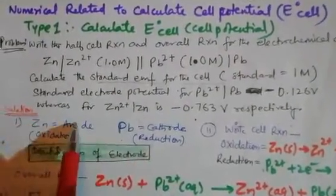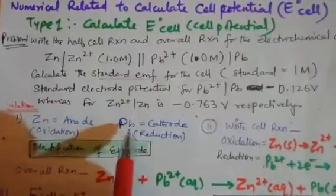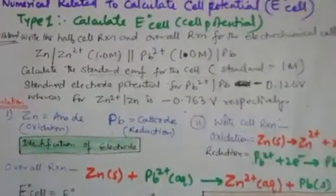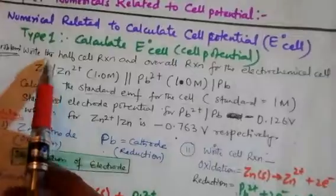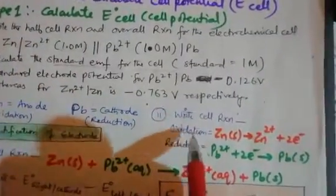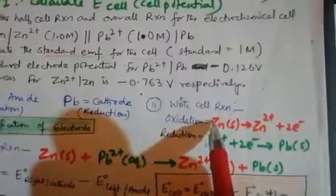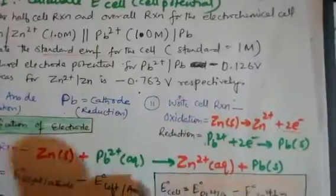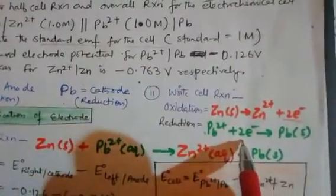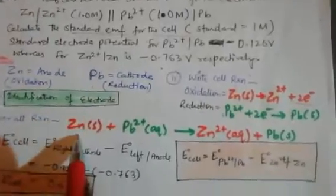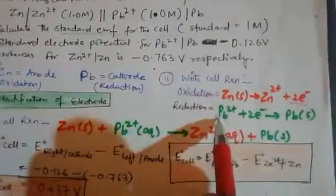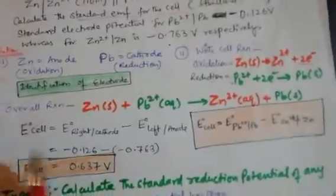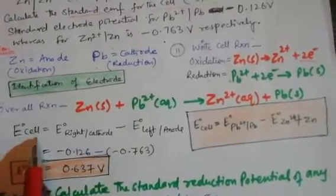Since zinc is anode it undergoes oxidation, and lead is cathode so it undergoes reduction. First step: identification of electrodes. Second step: write the cell reactions. Oxidation half-reaction: Zn → Zn²⁺ + 2e⁻. Reduction half-reaction: Pb²⁺ + 2e⁻ → Pb. Overall reaction: Zn + Pb²⁺ → Zn²⁺ + Pb.